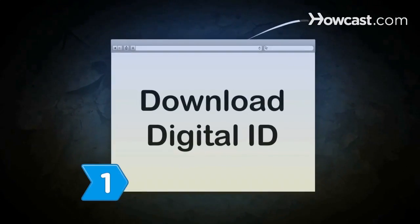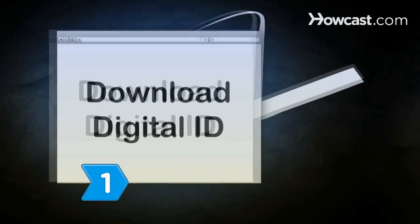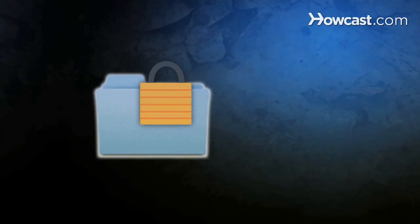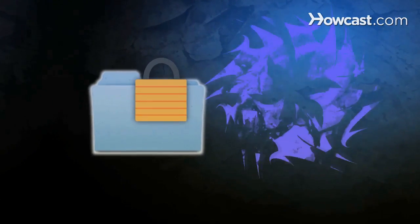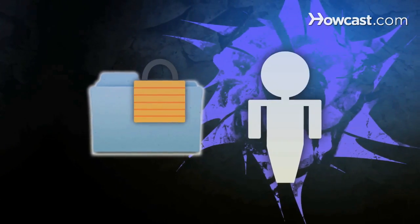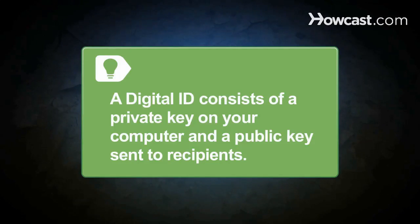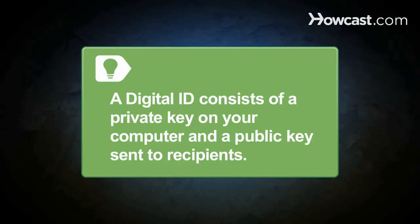Step 1: Download a digital ID for Outlook. It certifies to recipients that outgoing messages are unaltered and really came from you. A digital ID consists of a private key stored on your computer and a public key sent to your recipients.